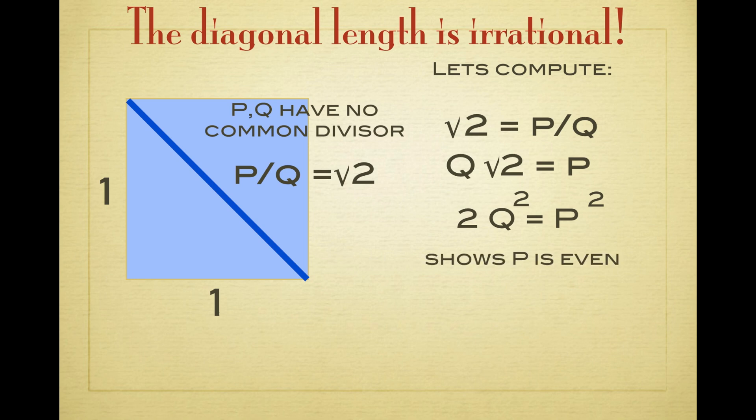But this shows that p is even, because on the left-hand side we have a factor of 2. Also on the right-hand side the factor of 2 has to be present, which means p has to have a factor of 2.